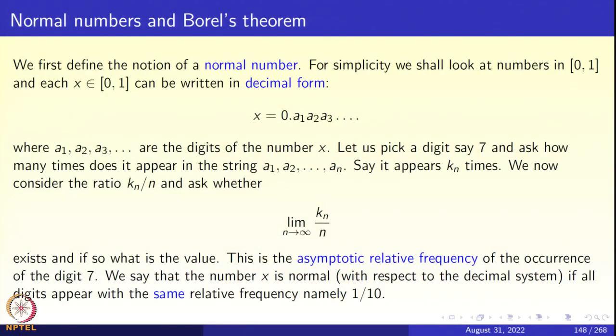First we define the notion of a normal number. Let us look at numbers in the interval [0,1] and each real number in the interval [0,1] can be written in decimal form x = 0.a₁a₂a₃... where a₁, a₂, a₃ are the digits of the number.